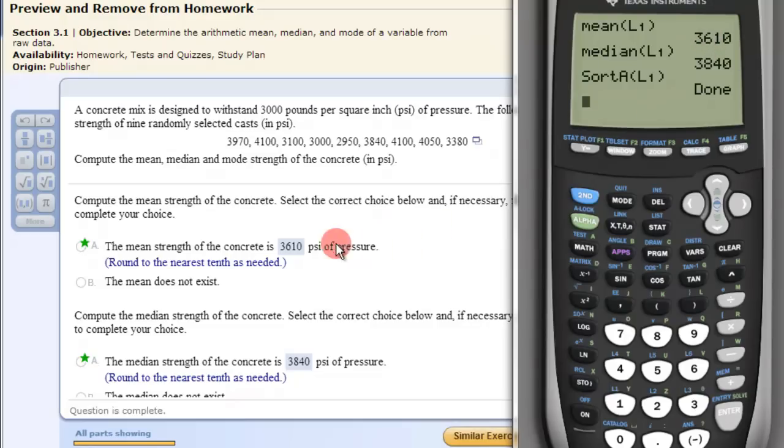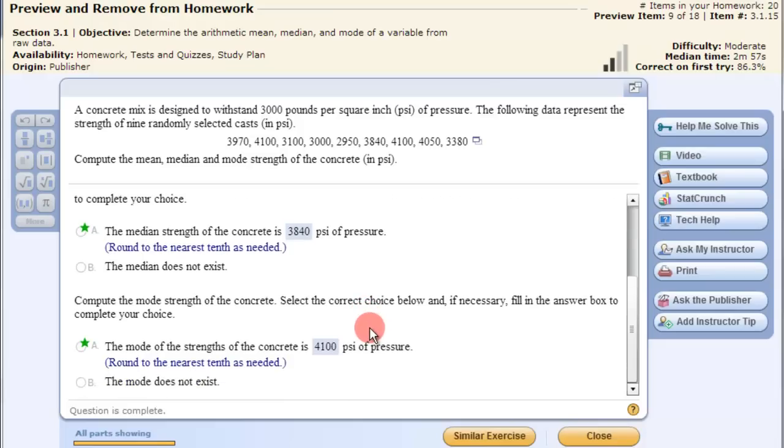The mean is 3610, the median is 3840, and the mode is 4100. So that's how you find the mean, median, and mode on the TI-83/84 calculator.